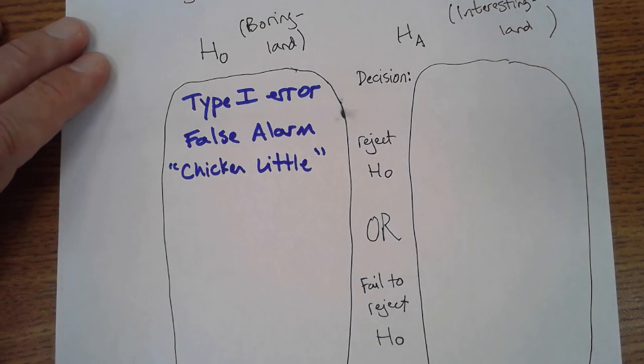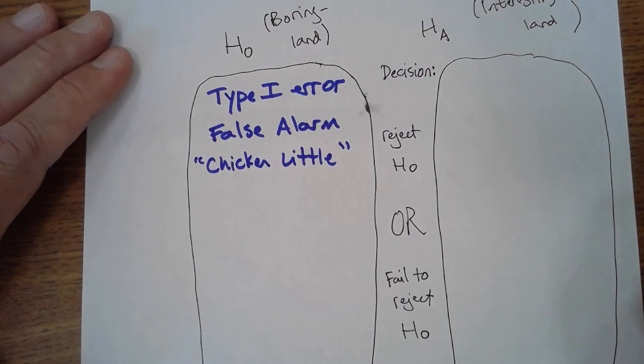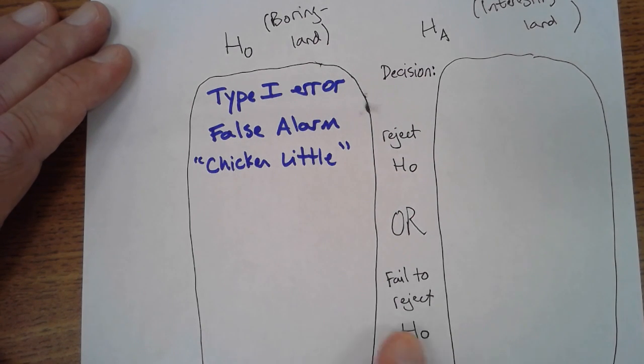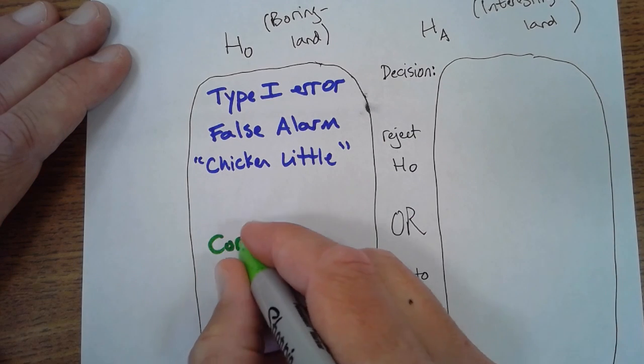On the other hand, if we live in boring land, and so in this context here, the paint formula, new and old, both work just as well as each other, nothing interesting, there's nothing interesting there, and we fail to reject the null hypothesis, we've made a correct decision. We, in fact, have correctly concluded that our data really don't support that the new paint works any better than the old. It's a correct decision, but it's not a very interesting one.